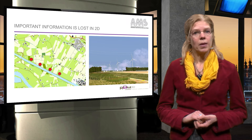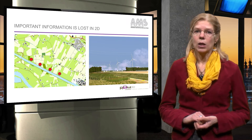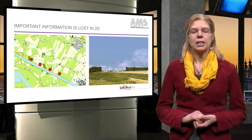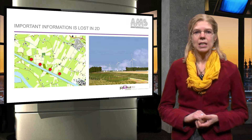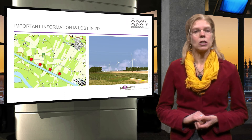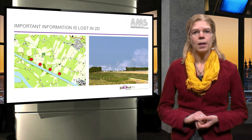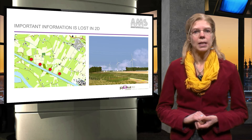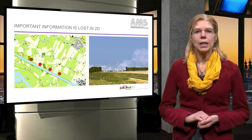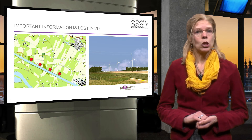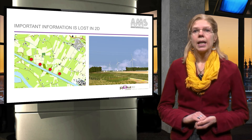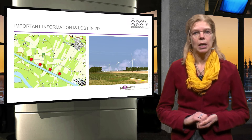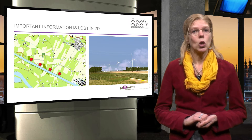A well-known example that illustrates this is the planning of windmills, prominent structures in the landscape. A 3D representation gives significantly more insight than a 2D representation of this planning problem. Besides better visual impact, a 3D representation provides the possibility to calculate the 3D environmental impacts of windmills, like noise and shadow. In addition, a 3D approach can easily compare the impacts of different types of windmills at different locations.